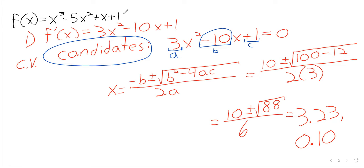These are maybe our critical values. At this point, all we know is that the derivative is zero there. That doesn't mean these are local extrema — it just means they are candidates to be local extrema. We need to follow this up with further investigation, and the technique we have available is the first derivative test.